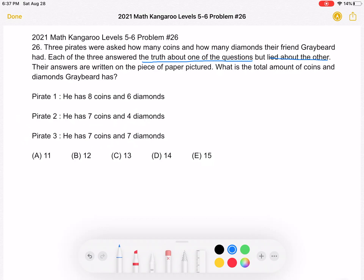So what does that mean? It means that the seven coins is the true part of each of their statements, and the diamonds are the lies.